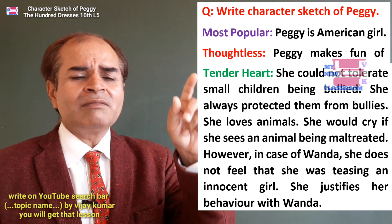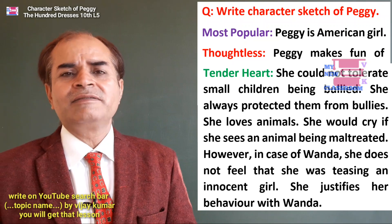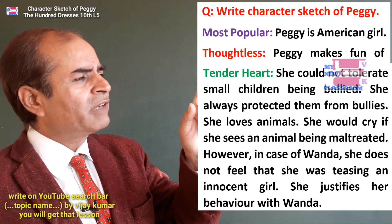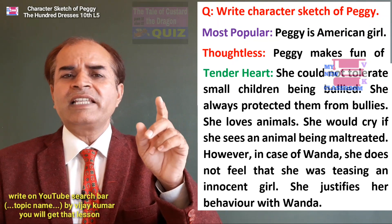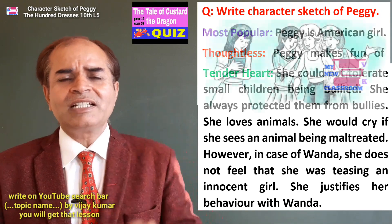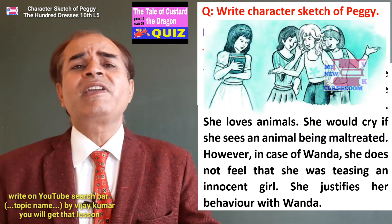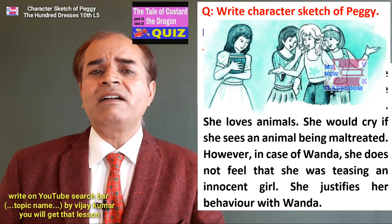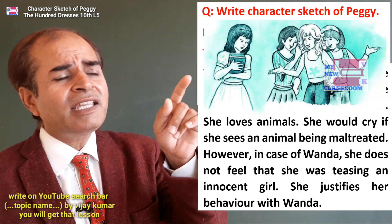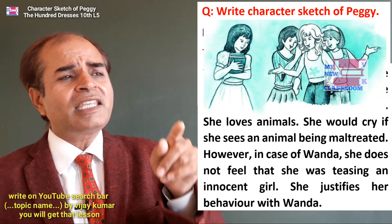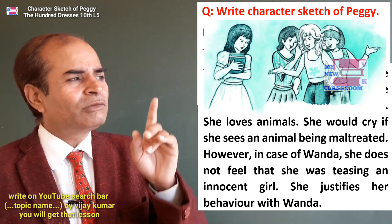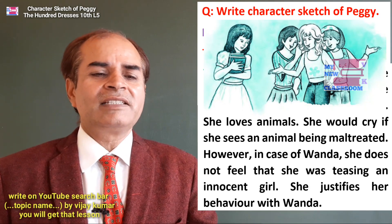However, in the case of Wanda, she does not feel that she is teasing an innocent girl. She justifies her behavior by saying that Wanda is lying about having 100 dresses when she doesn't — so why does she claim to have 100? That is why she teases her. Actually, Peggy is a good girl at heart.